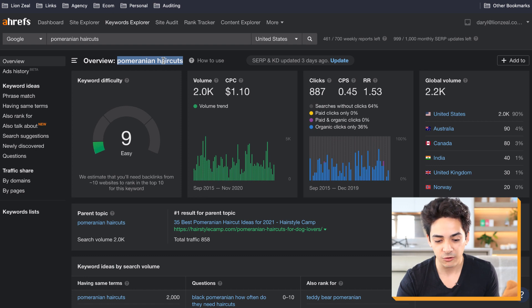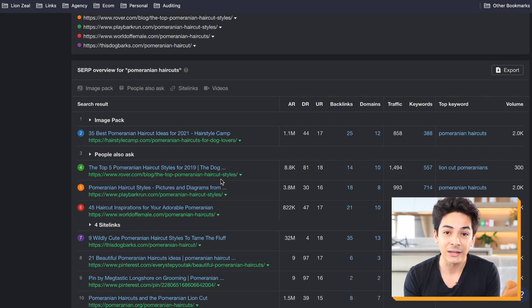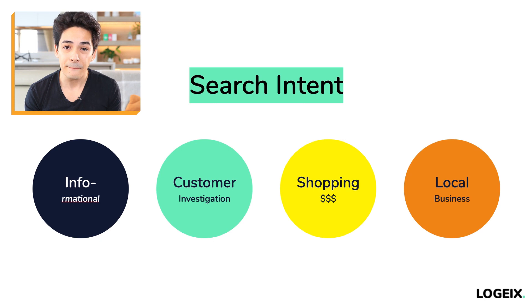To recap, there are four types of intent you really want to look out for: informational intent, customer investigation intent, shopping intent, and local business intent. If you don't know what I'm talking about, go back and watch the keyword research module — I explain this in much more detail.